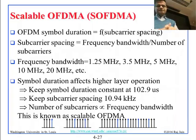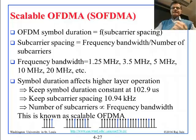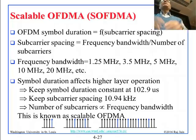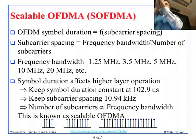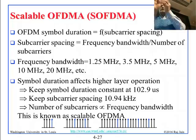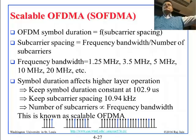In scalable OFDMA, symbol duration depends on the carrier spacing. If carrier spacing is 100 kilohertz, each carrier is 100 kilohertz wide. Note the distinction: the carrier frequency might be around 1 GHz — say 1.000, 1.001, 1.002, 1.003 GHz — but the width of each subcarrier is very small. The spacing between subcarriers is what matters, and it determines symbol duration. Subcarrier spacing equals frequency bandwidth divided by number of subcarriers.